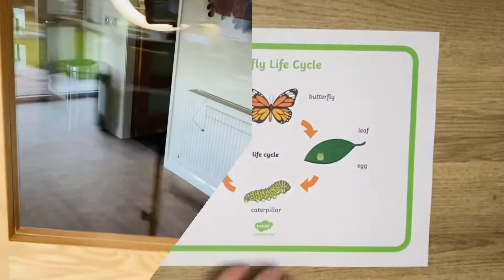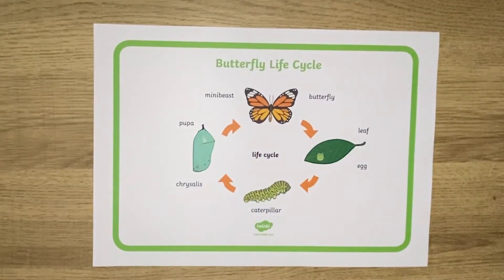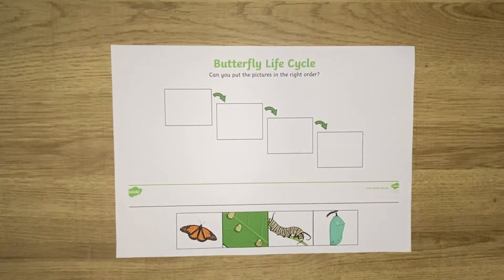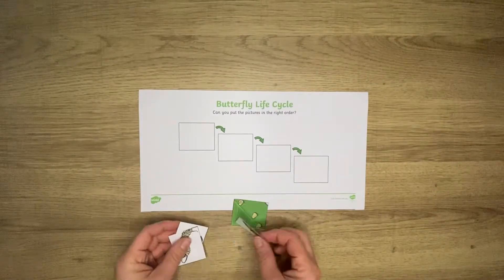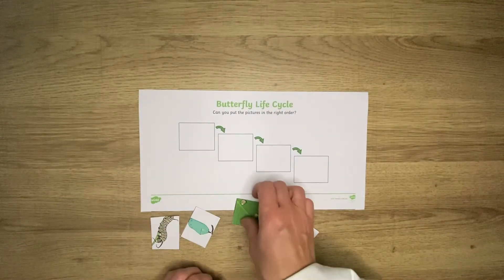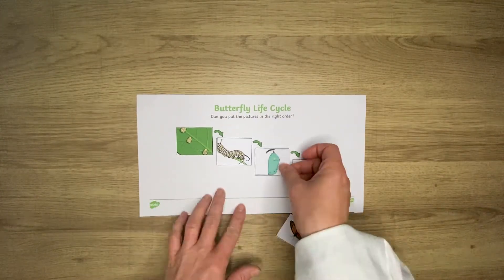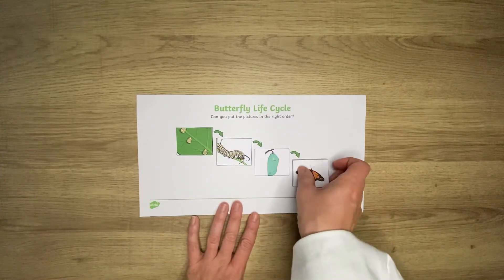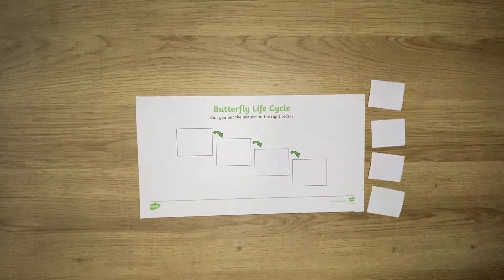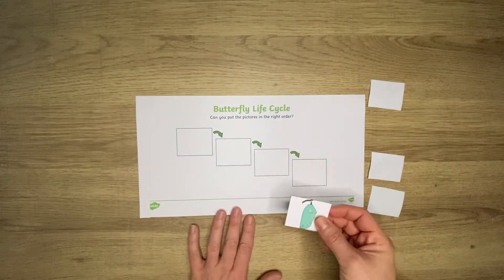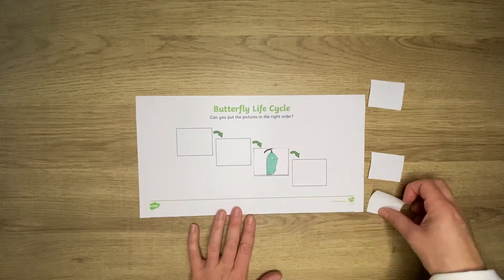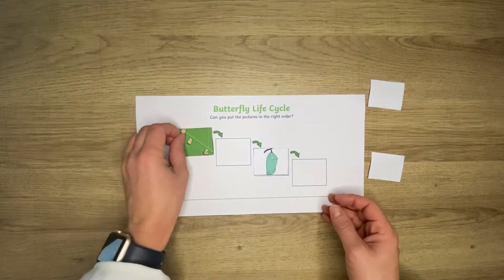This butterfly lifecycle resource pack contains oodles of resources to help out when teaching this topic. It contains worksheets, display photos, word maps, interactive visual aids and much more. Why not use the butterfly lifecycle word map to help complete the lifecycle activity sheet? Cut out the pieces and put them in the correct order.